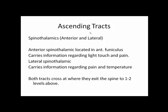Those are the first ascending tracts. The next are called the spinal thalamiacs — there are two, the anterior and the lateral. The anterior spinal thalamic is located in the anterior funiculus and carries information regarding light touch and pain. The lateral spinal thalamic is a classic tract carrying pain and temperature, located in the lateral funiculus of the spinal cord.